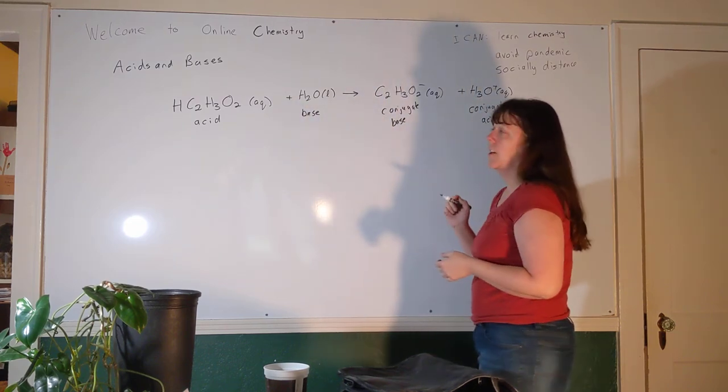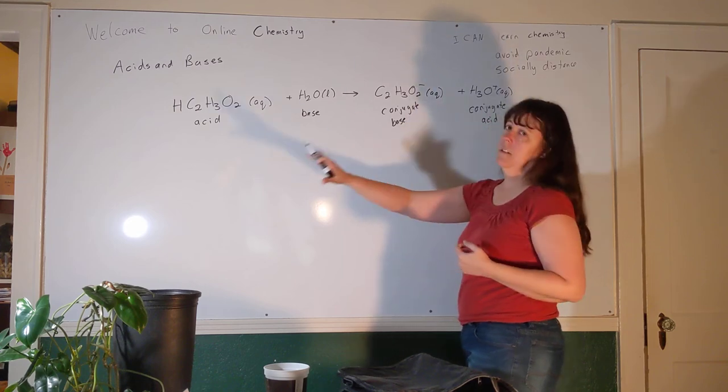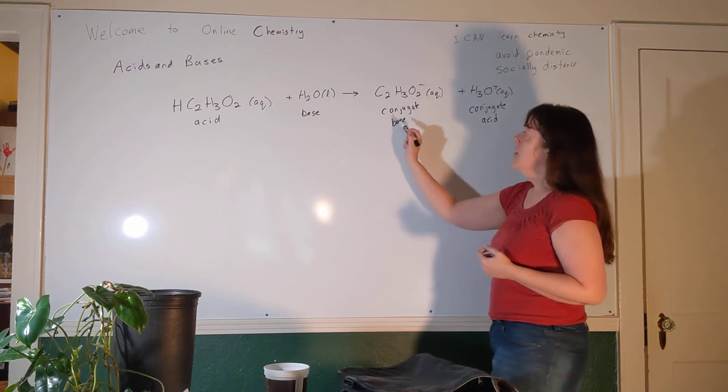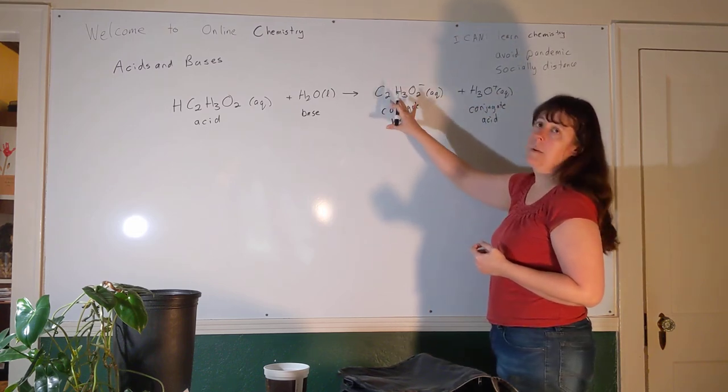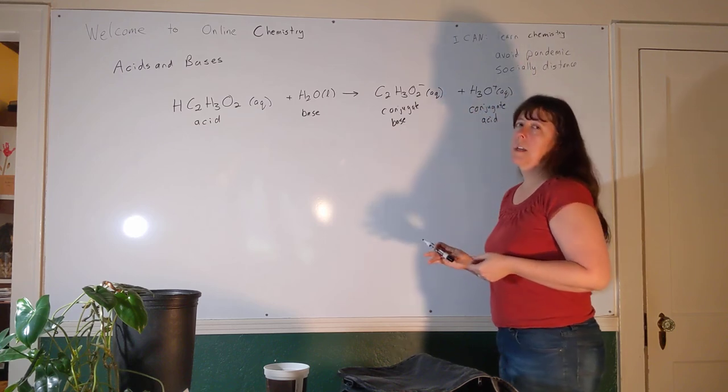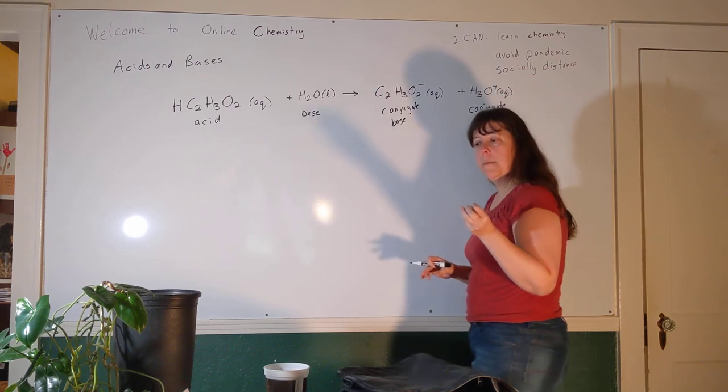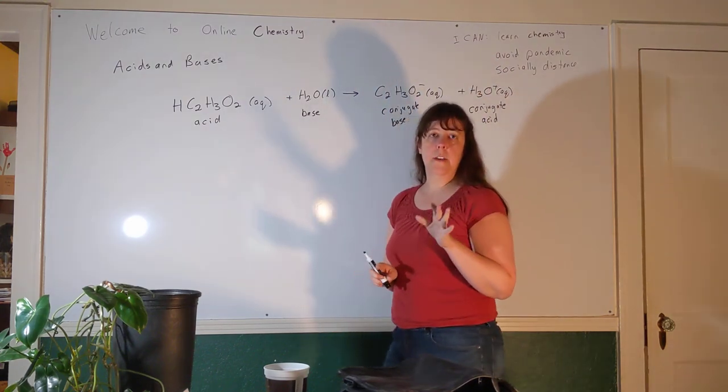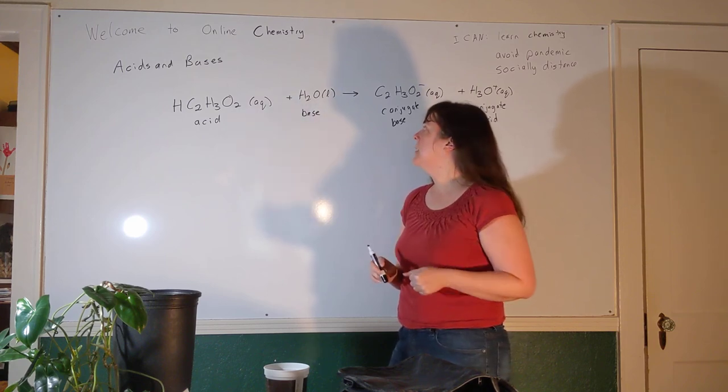If we were to write this reaction backwards, where we had hydronium and acetate ions on the left, and then acetic acid and water on the right, then hydronium would just be the acid, and acetate would be the base, and the others would be the conjugates. Maybe I'll do a couple of practice problems maybe in a Google Doc to give you a little bit more practice with this. I think some of you, probably it clicks, it makes a whole lot of sense, and some of you maybe less so.